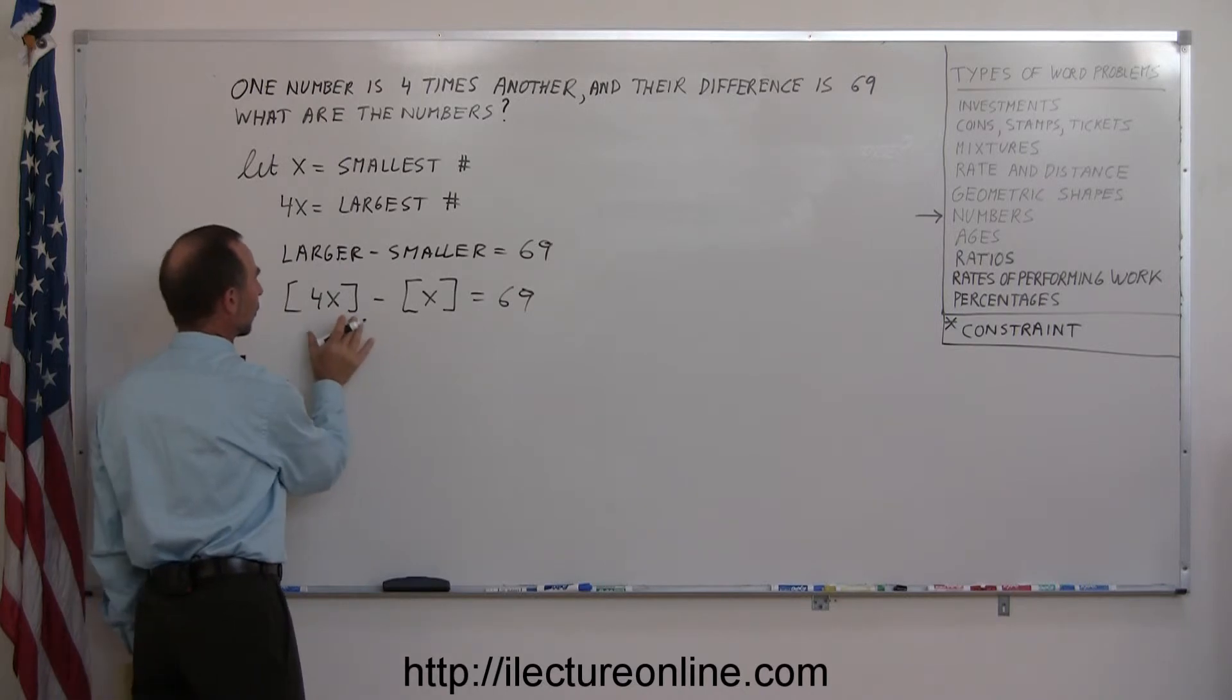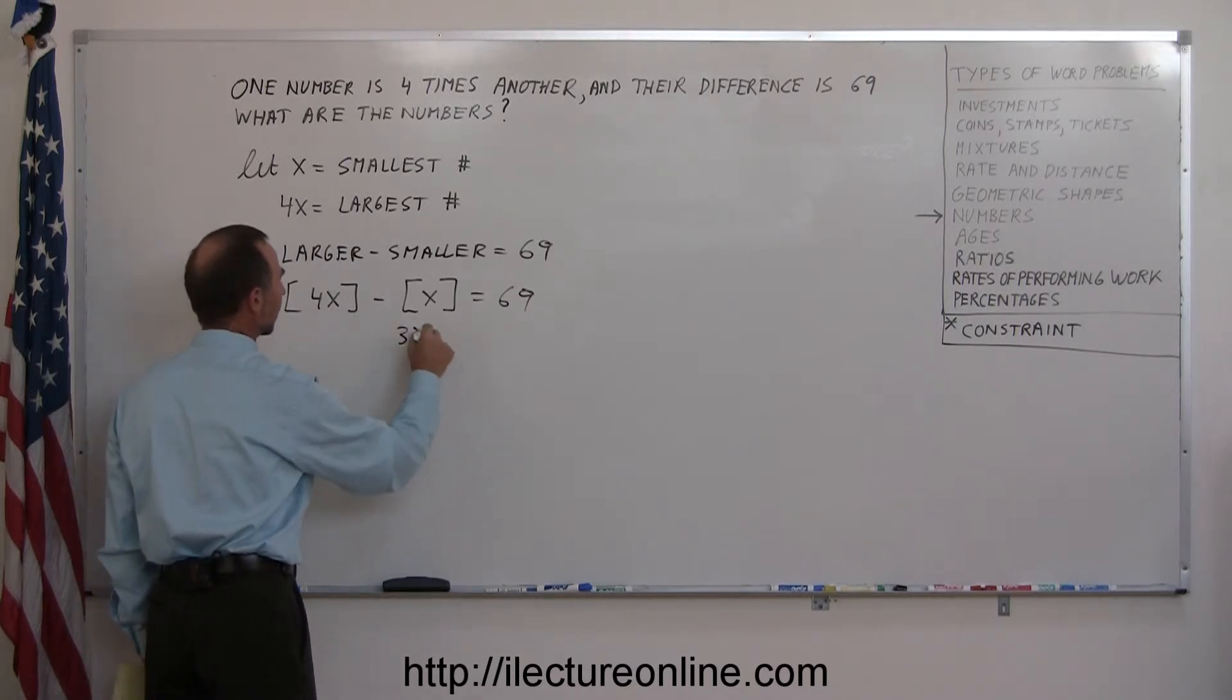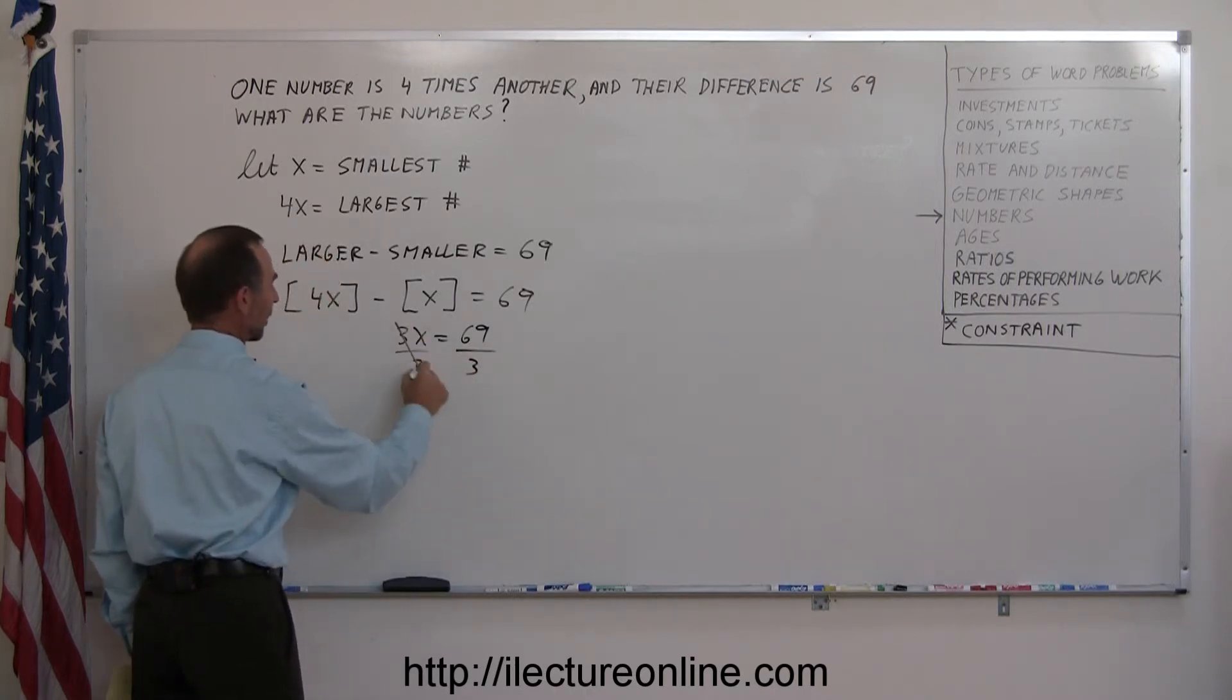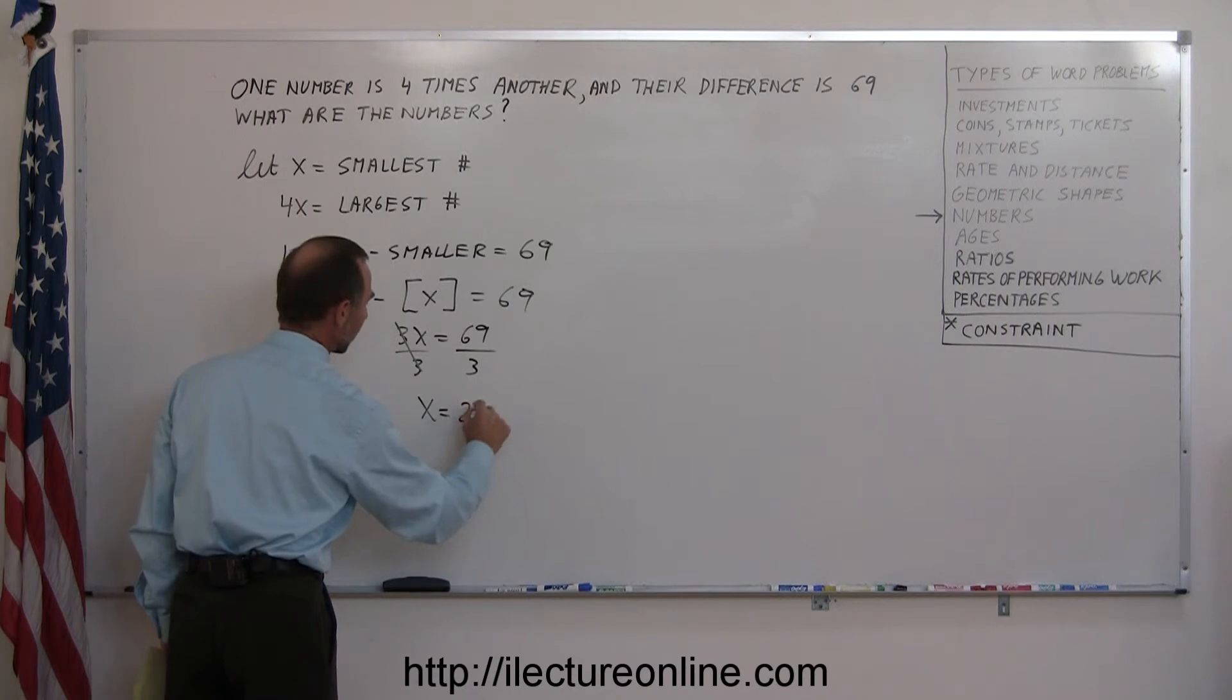Now we can solve for 4x minus x, that's 3x, equals 69. Divide both sides by the coefficient in front of x. That cancels out, so x equals, that would be 23.